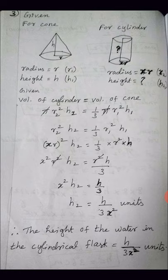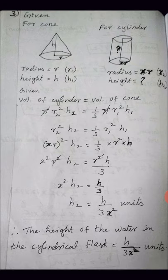For the cylindrical part, in the question they give radius equal to xr units. So I take r2 = xr and height as h2. Since the water in the conical flask is poured into the cylindrical flask, the volumes are equal — that is, volume of cylinder equals volume of cone.